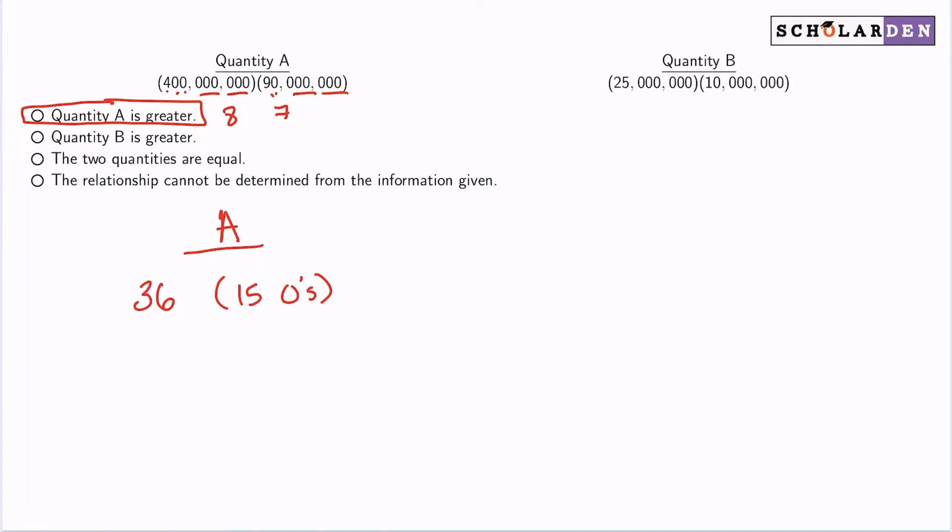For quantity B, we have 25 and 1, so that'll be 25. And then how many zeros? Three, six, nine, 12, 13. So we have 13 zeros.